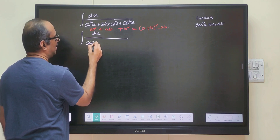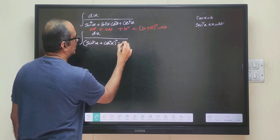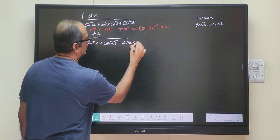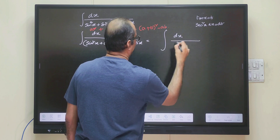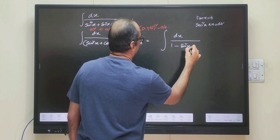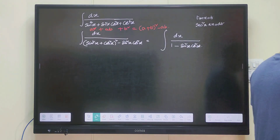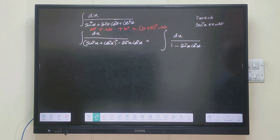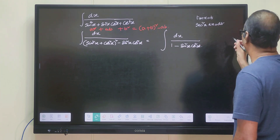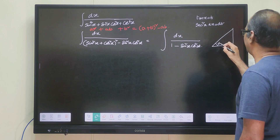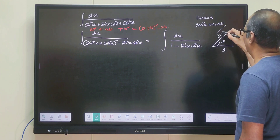So I can write sin square x plus cos square x whole square minus sin square x cos square x. The given integral now becomes the integral of dx divided by 1 minus sin square x cos square x. We will substitute tan x equals to t — if tan x is t, then the hypotenuse is square root of 1 plus t square.